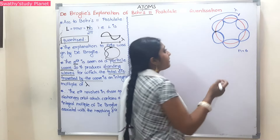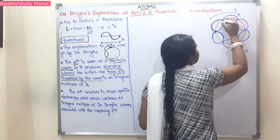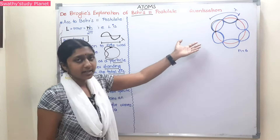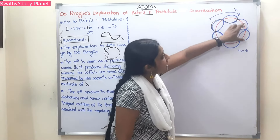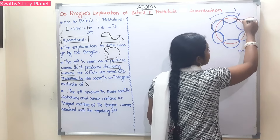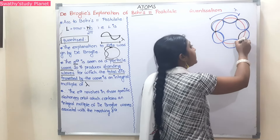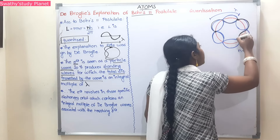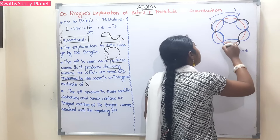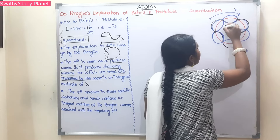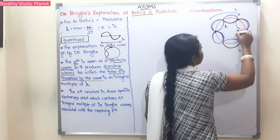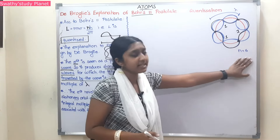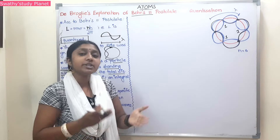Lambda is nothing but wavelength. If you see one complete wavelength in the orbit, that is one lambda. Then a second lambda, and so on. Looking at the diagram, we can see one lambda, another lambda, and another lambda — there are three wavelengths fitting in the orbit.